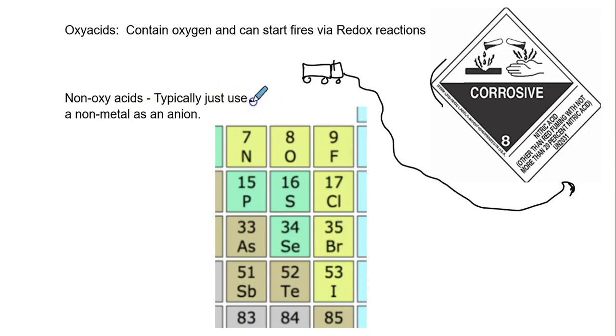If a truck containing acid tips over on a highway 41, they shut down the highway. But, if it tips over outside of our school, now we've got to evacuate the whole school. It's problems. So, non-oxyacids are typically used just when it's non-metals.